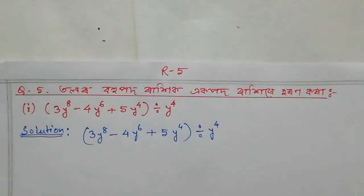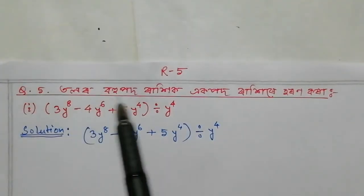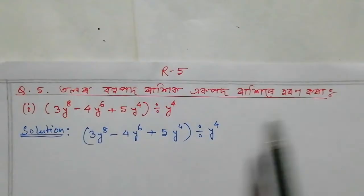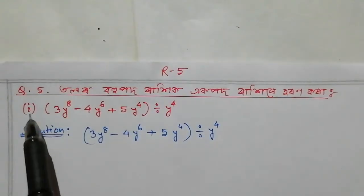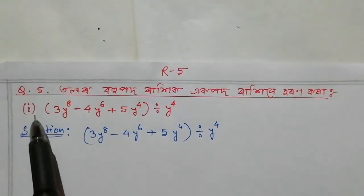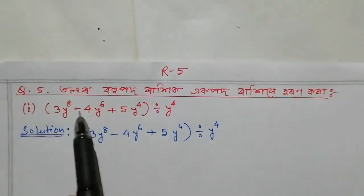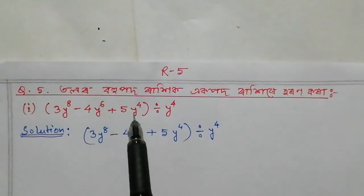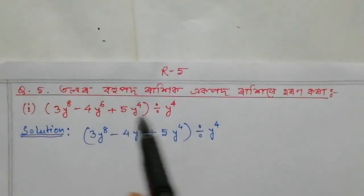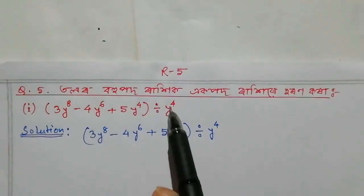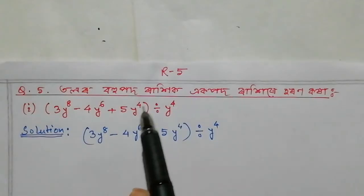First, question No. 5-2. If you want to write question No. 5-1 or question No. 1-2: 3y to the power 8, minus 4y to the power 6, plus 5y to the power 4, with a division sign, then y to the power 4.